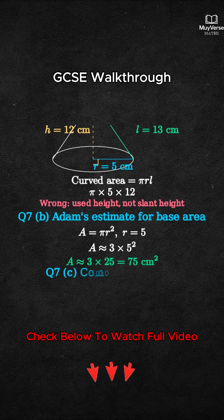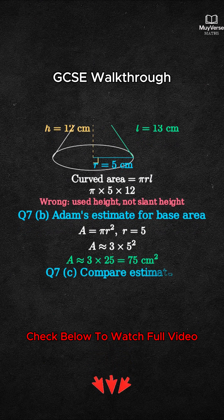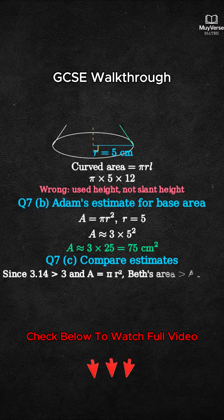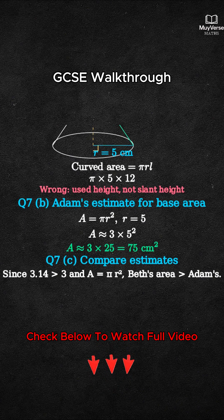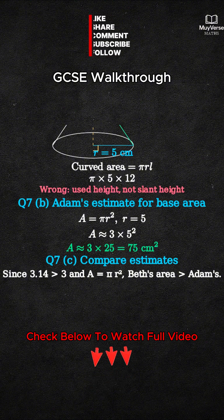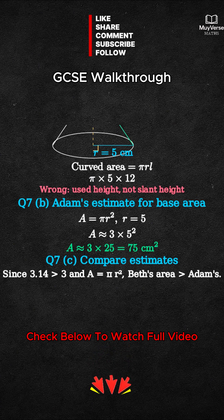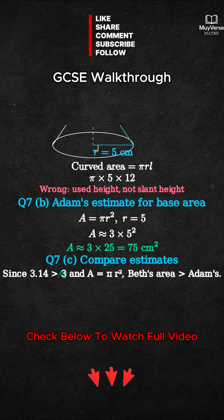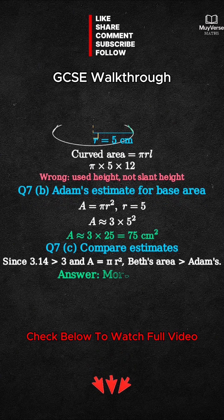Question 7 Part C: Beth uses pi approximately 3.14. Is her estimate more than or less than Adam's? Because 3.14 is bigger than 3, and the area equals pi times R squared, Beth's area is larger. Tick the option 'more than'.